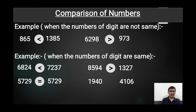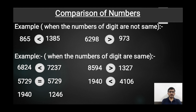Next example: 1940 and 4106. The place value of thousands in the first number is 1000 and in the second is 4000. Since 4000 is greater than 1000, we write 1940 is less than 4106. Next example: 1940 and 1246 — the thousands place is the same in both, so we compare the hundreds place. In the first number the place value of hundreds is 900 and in the second it is 200. Since 900 is greater than 200, we write 1940 is greater than 1246.